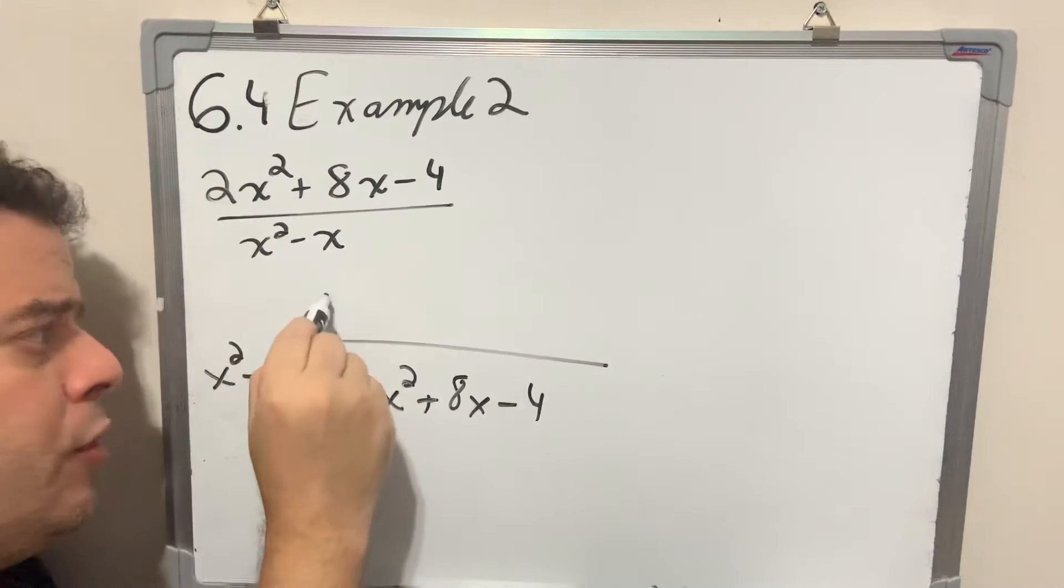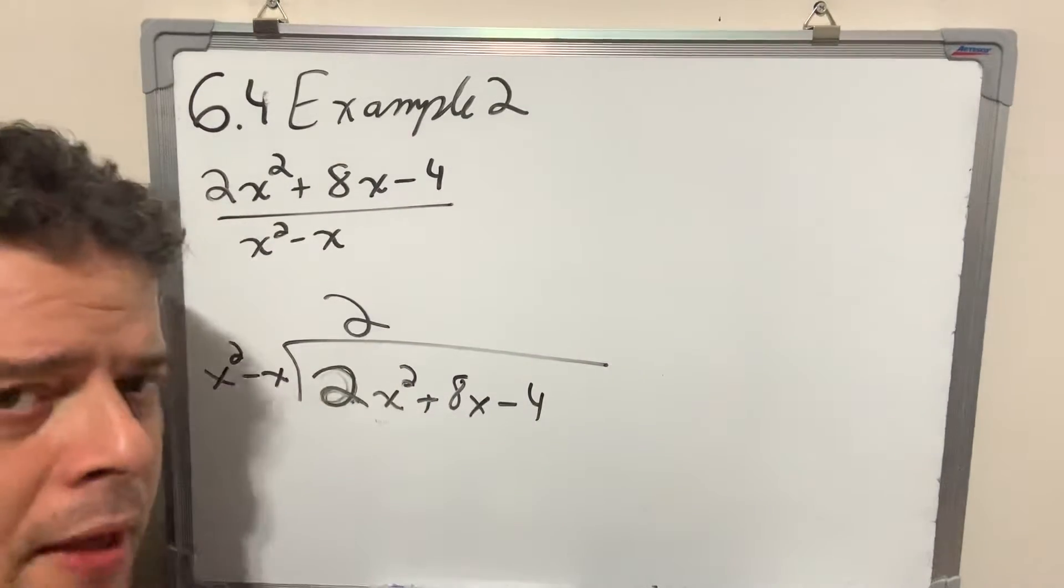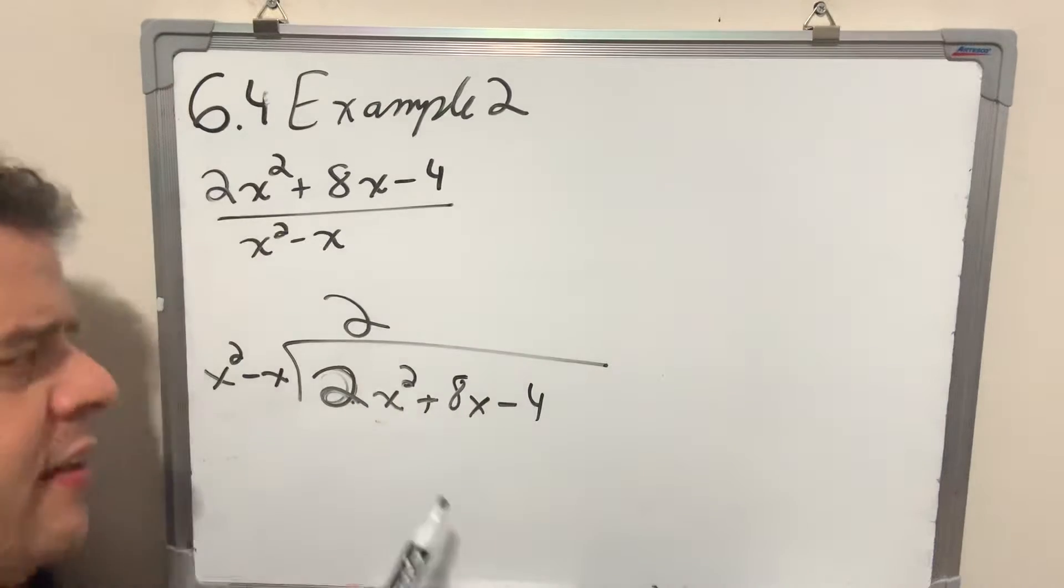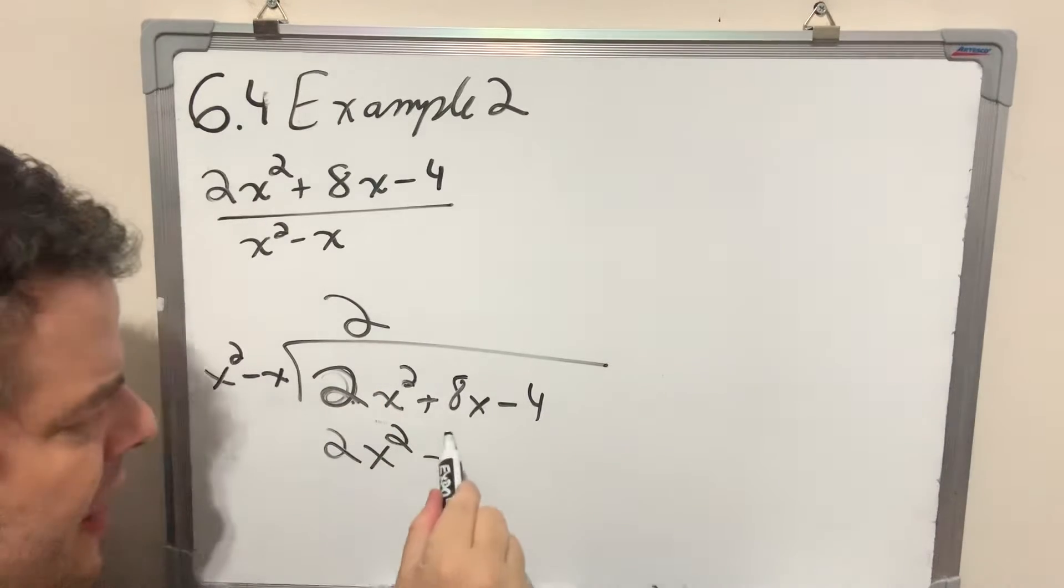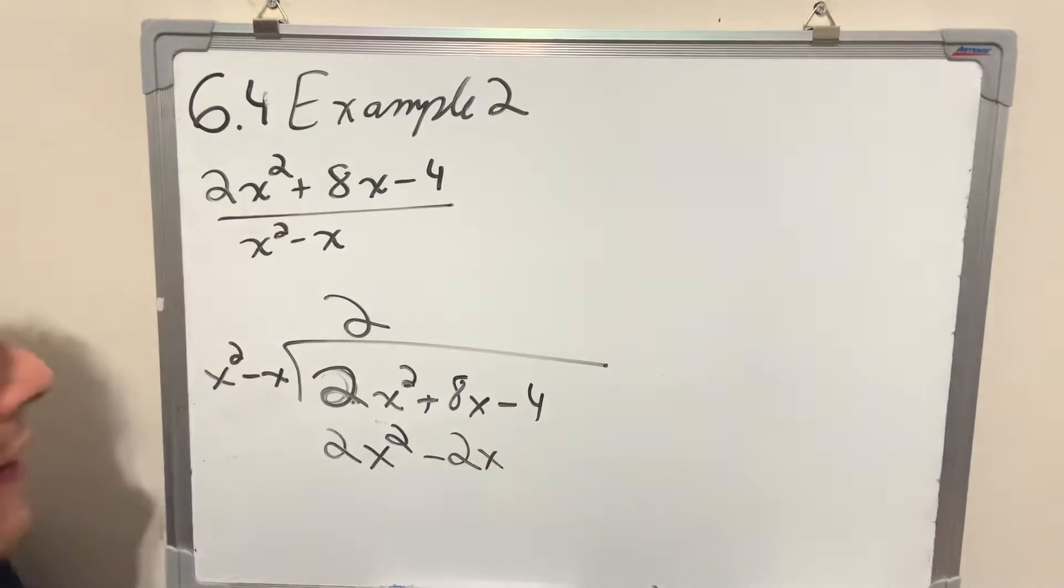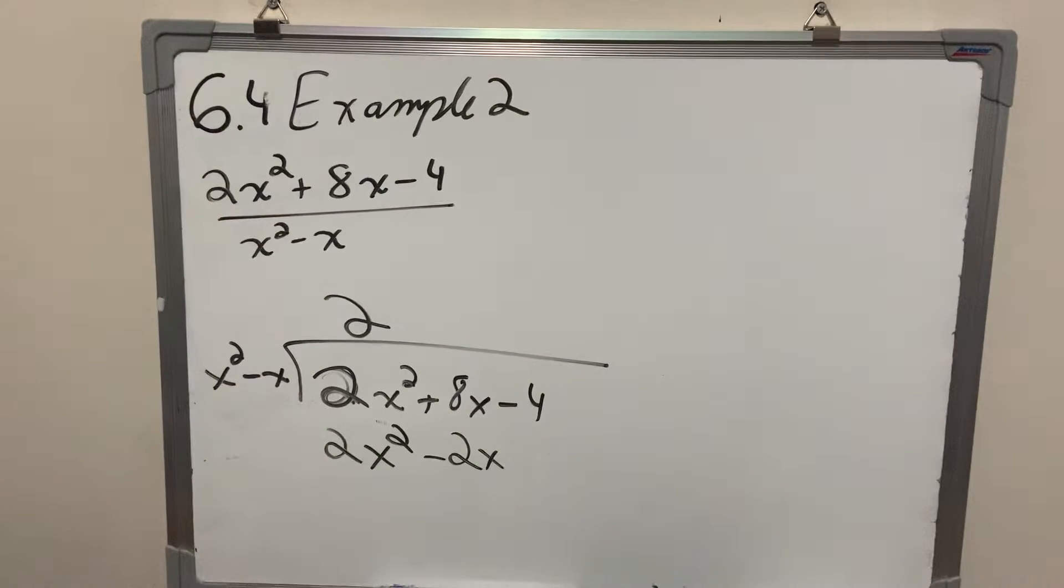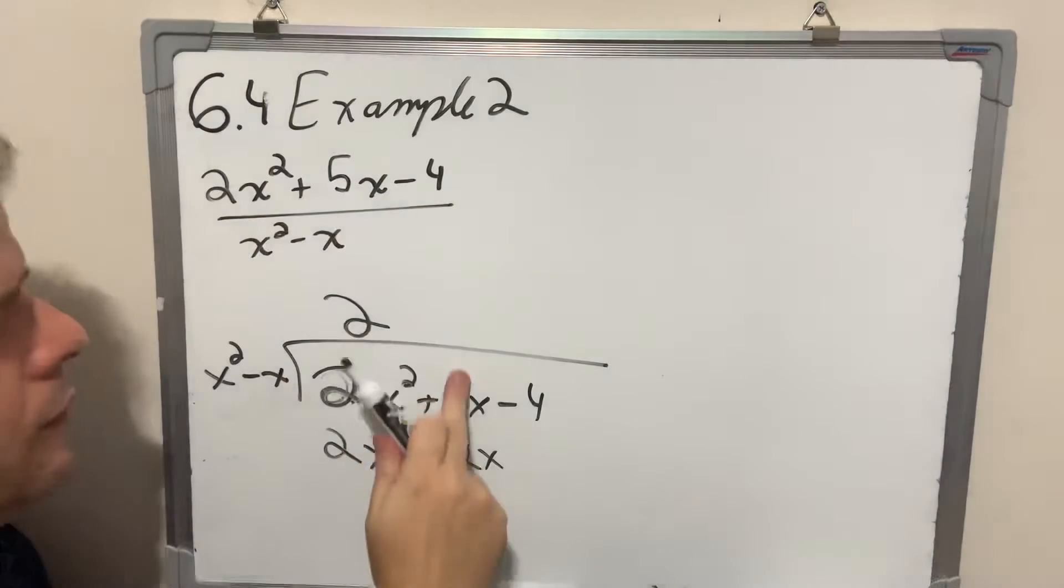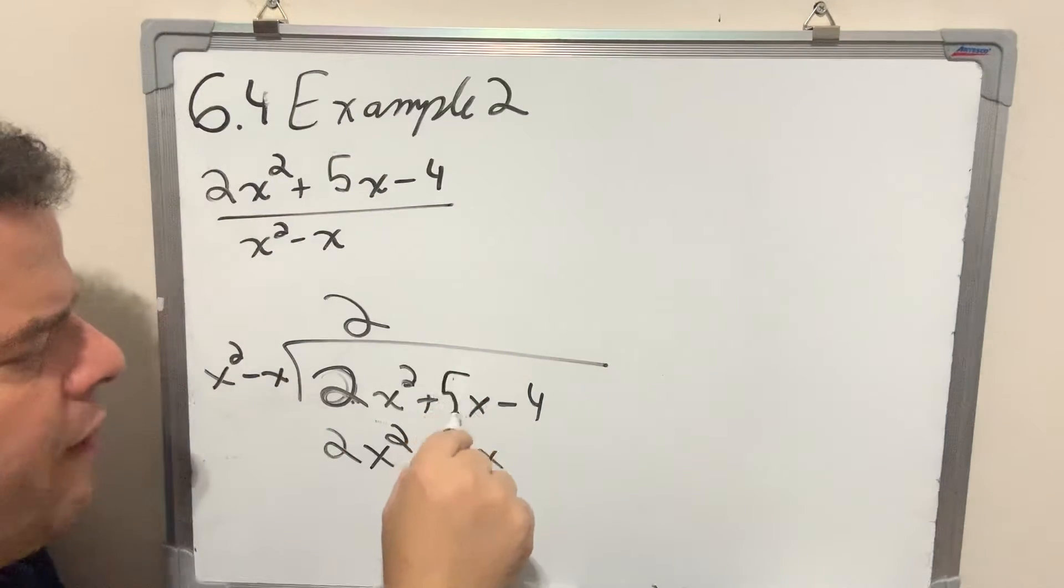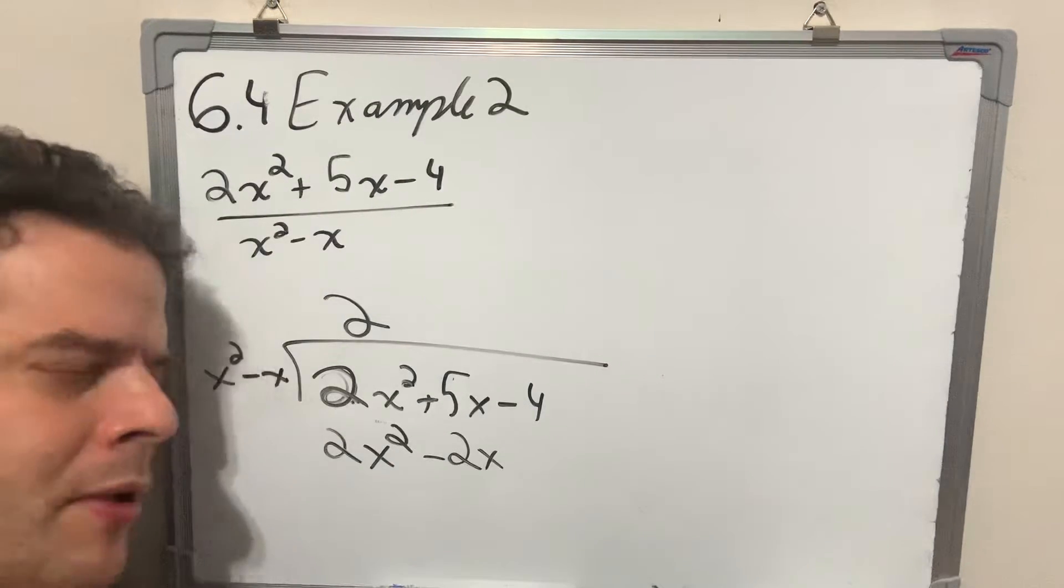And in this case, it's the number 2. You put a 2 up here, and then you multiply this entire expression by the number 2. And you change the sign. 2 times x squared is 2x squared. 2 times negative x, negative 2x. And I think I copied this incorrectly. I think that's a 5. Yeah, it is a 5. Sorry about that. This is actually a 5. Wouldn't change much, but let's use the exact same numbers we have in the book so you can verify.